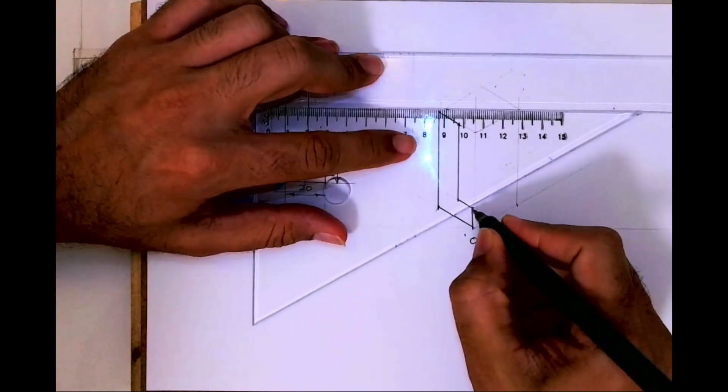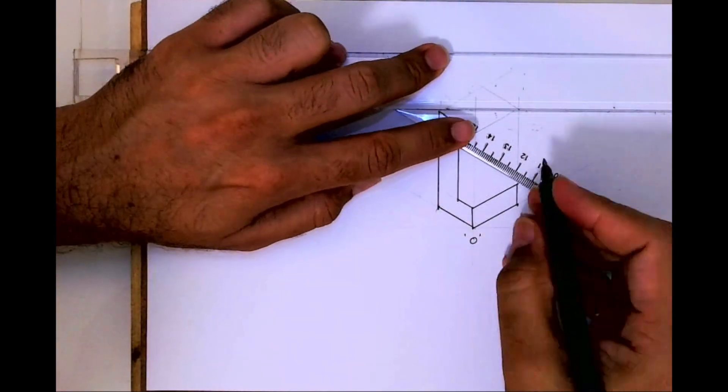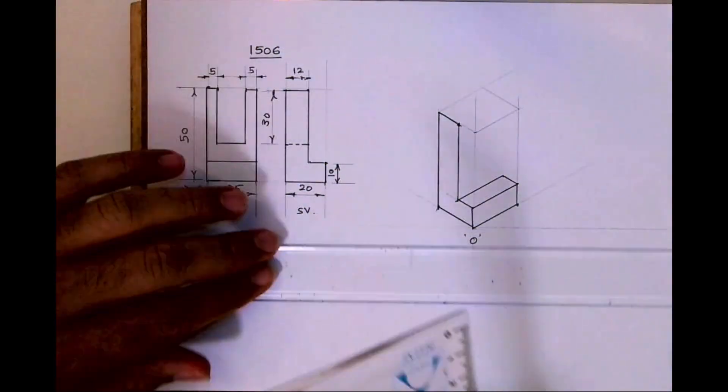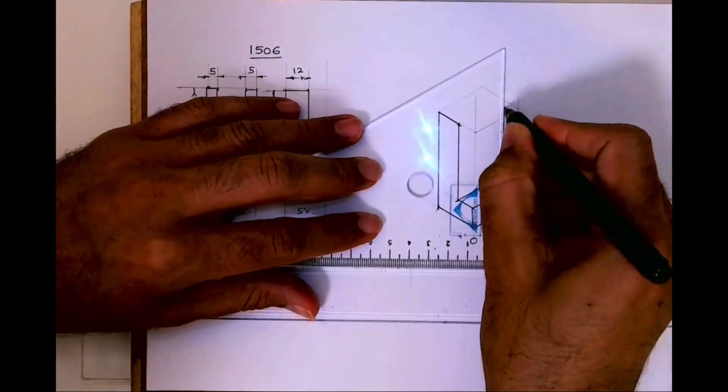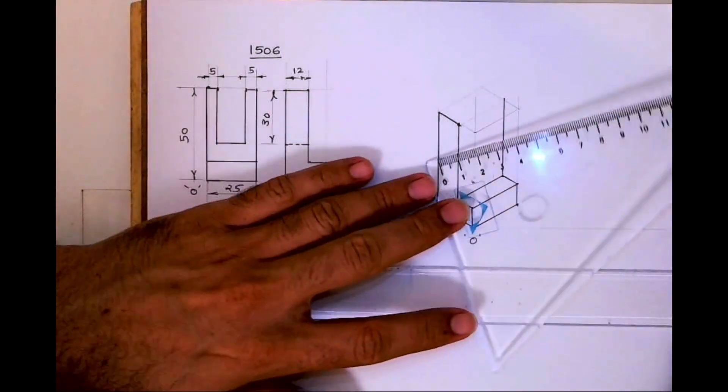See this. Now whatever is there on the left, same thing is on the right. So with that concept, I can take all these points inside by 20. So this is what you will get if you see the front view.